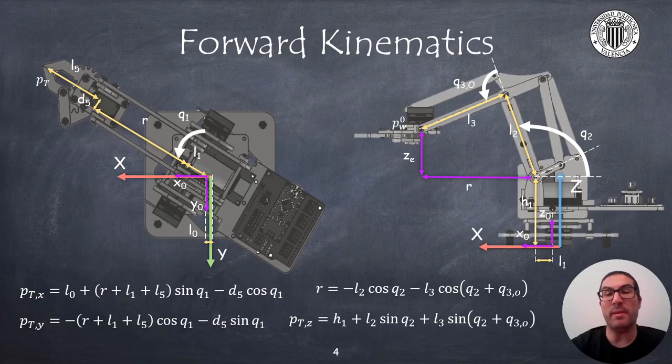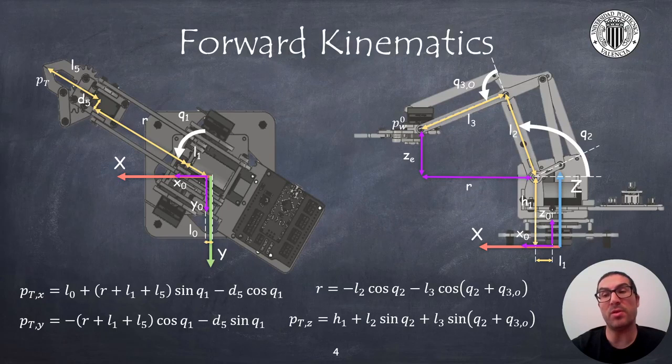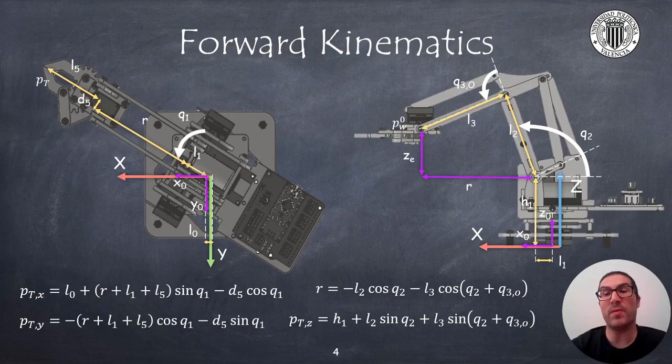The forward kinematics are used to compute the position of the robot gripper from joint angles. To compute the gripper position in x and y coordinates, we first need to compute the distance r, that is, how far is the gripper with respect to the joint axes 2 and 3.